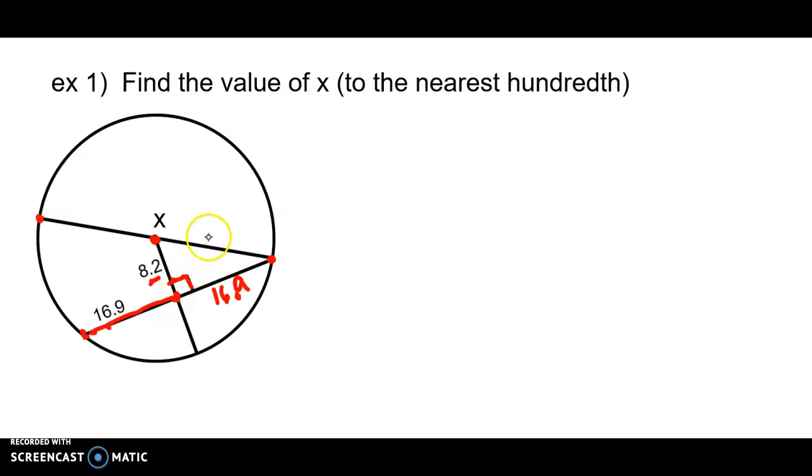Because we have a right triangle, we can find this length from here to here. Let's call that length Y. Actually, let's call it R because it's the radius of the circle. So we know that R squared equals 8.2 squared plus 16.9 squared.